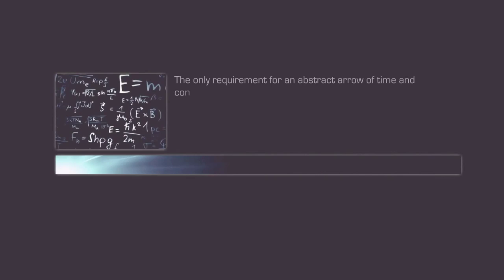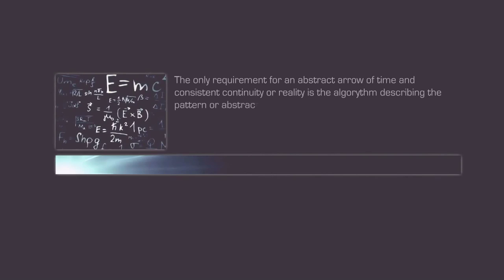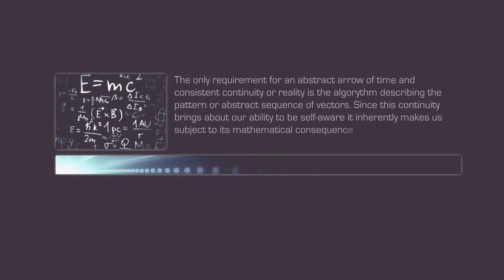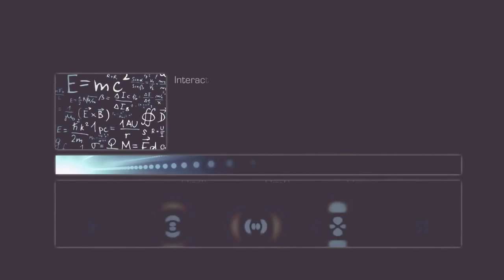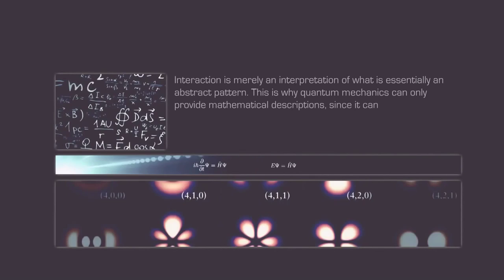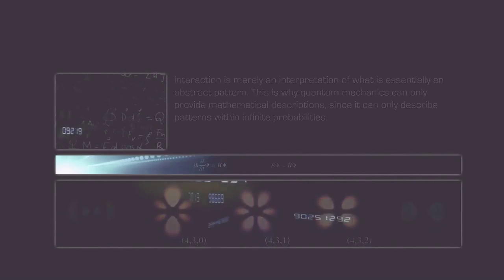The only requirement for an abstract arrow of time and consistent continuity or reality is the algorithm describing the pattern or abstract sequence of vectors. Since this continuity brings about our ability to be self-aware, it inherently makes us subject to its mathematical consequences, the fundamental laws of physics. Interaction is merely an interpretation of what is essentially an abstract pattern. This is why quantum mechanics can only provide mathematical descriptions since it can only describe patterns within infinite probabilities. When a probability is expressed as C, the information necessary to describe the current moment or probability amplitude of C is also what embodies the arrow of time.